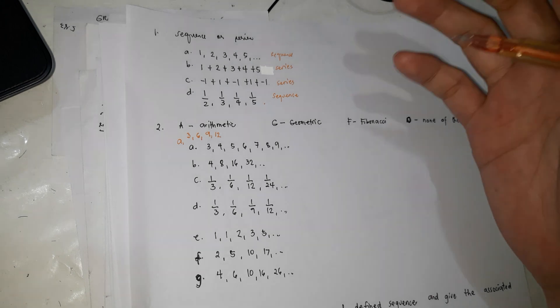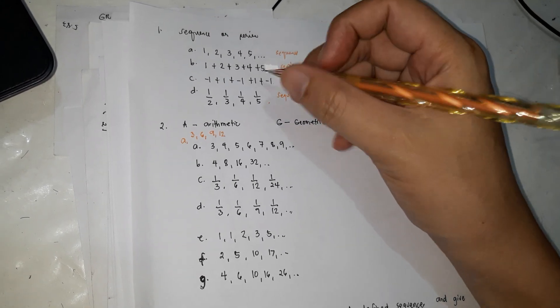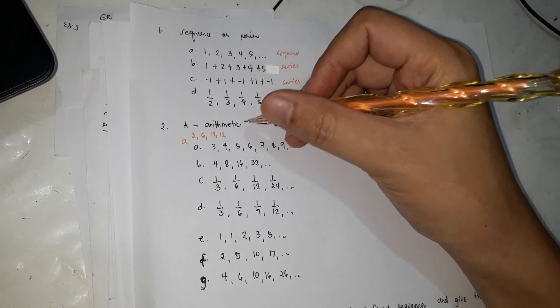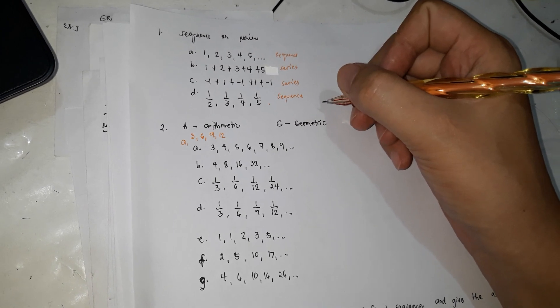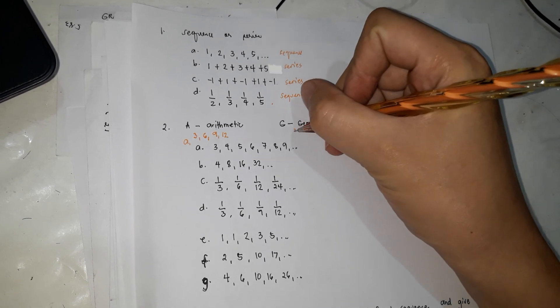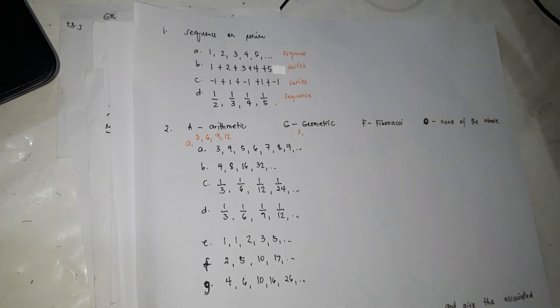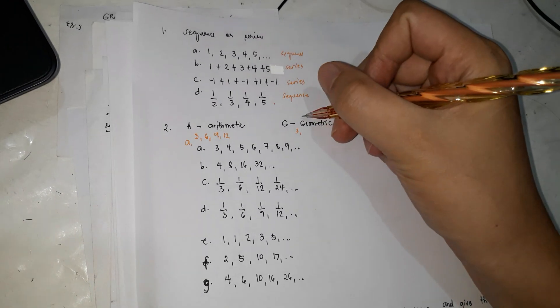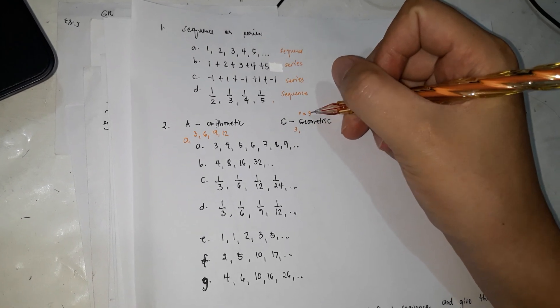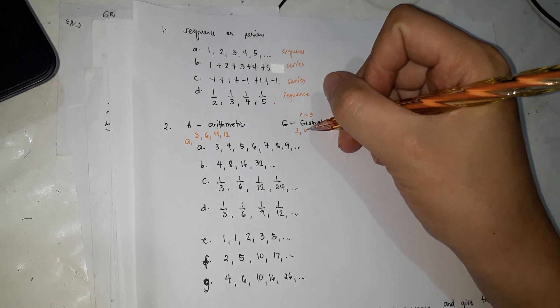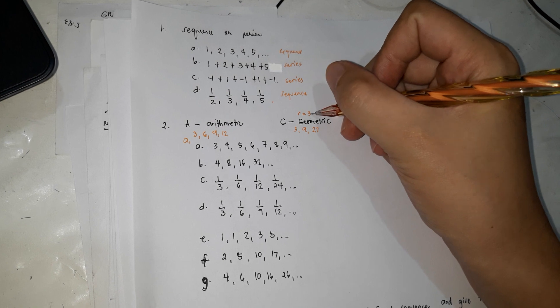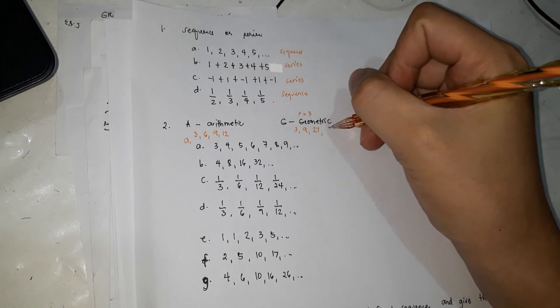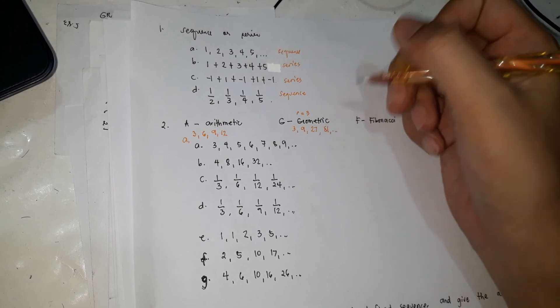However, if arithmetic has a common difference, geometric has a common ratio. That means to get the next term, you need to multiply by a number. For example, if the ratio is 3: 3 times 3 is 9, 9 times 3 is 27, 3 times 27 is 81. That's how you identify the next term — that's geometric.